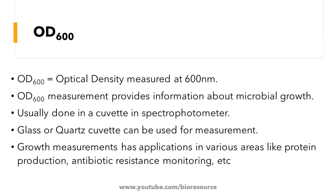What is OD600? OD600 is the optical density measurement done at 600 nanometers. The OD600 measurement provides information about microbial growth. So basically we want to measure the growth of a microorganism, and we can do that by taking the OD600. It is usually done in a cuvette using a spectrophotometer.